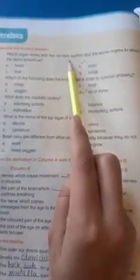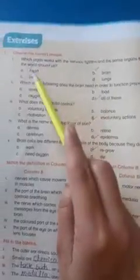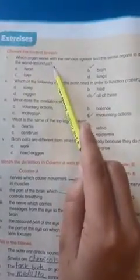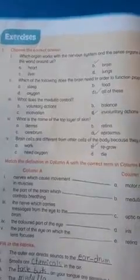Which organ works with the nervous system and sense organs to detect the world around us? Which organ is the sense organ and detect each other? And its answer is brain because it's a control center.